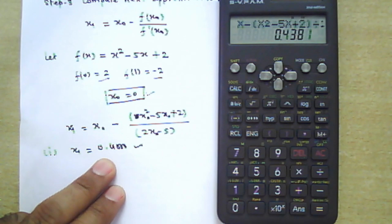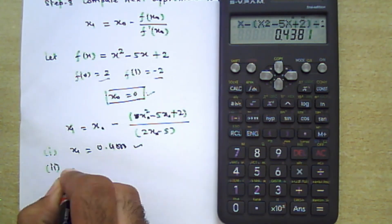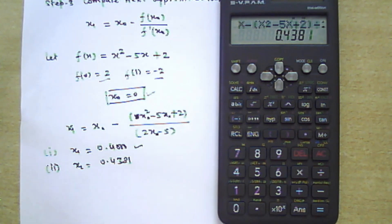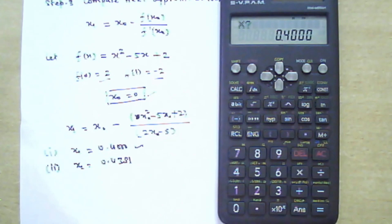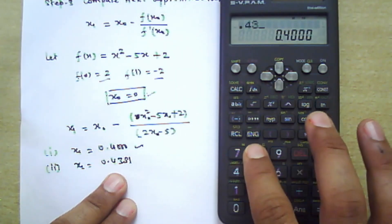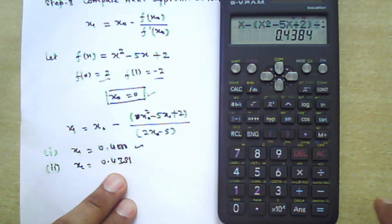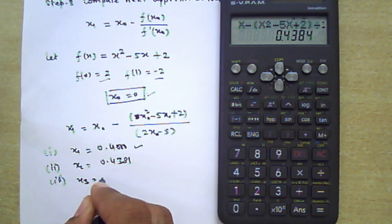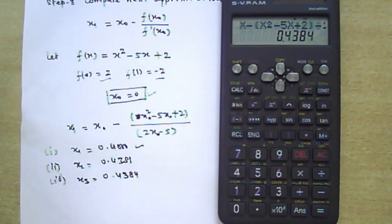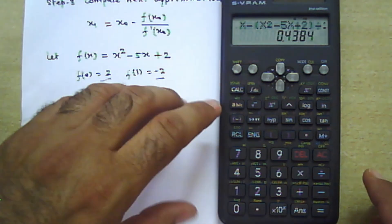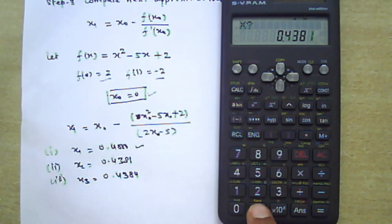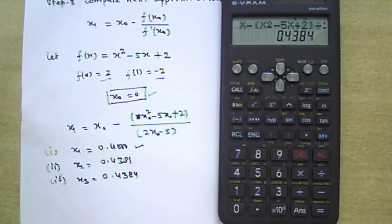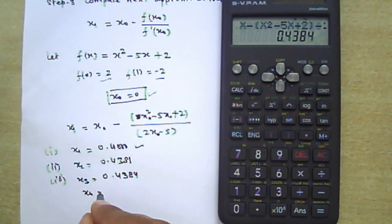Enter 0.4000 and press equals to get x₂ = 0.4381. This is the second approximation. Press Calculation again, enter 0.4381, and press equals to get x₃ = 0.4384. Press Calculation once more, enter 0.4384, and press equals. The result is x₄ = 0.4384.